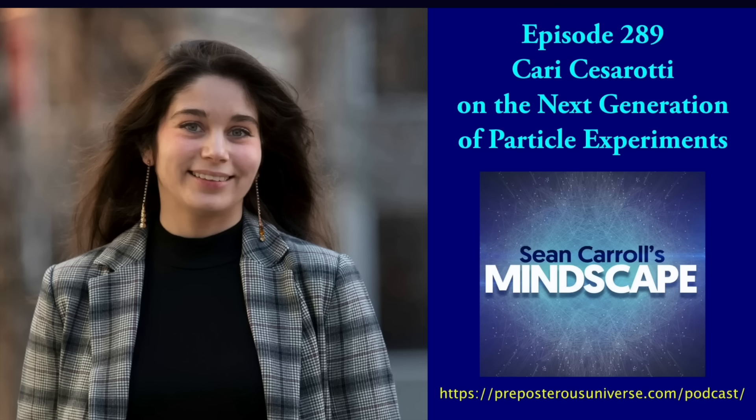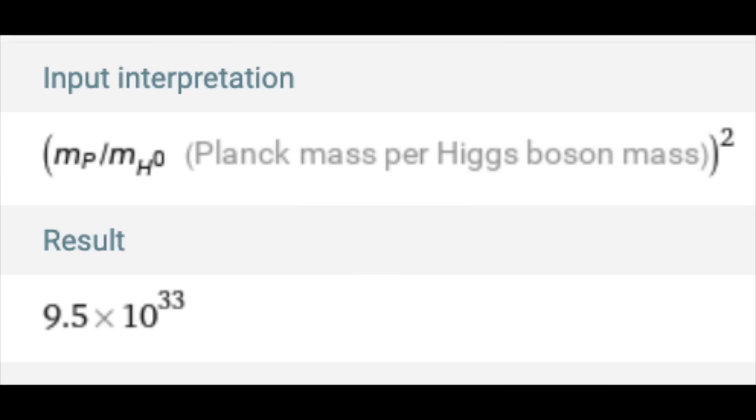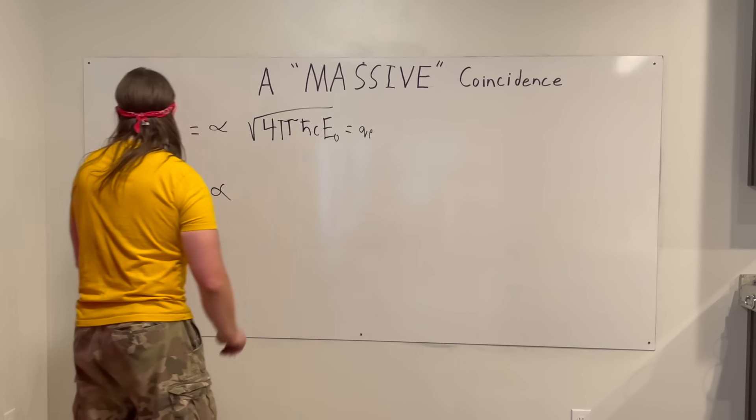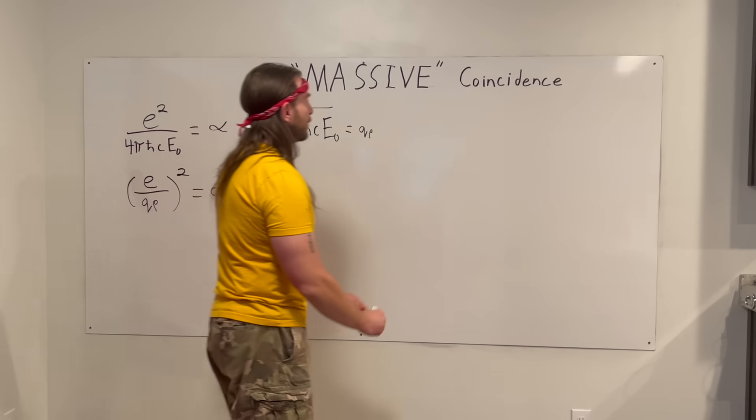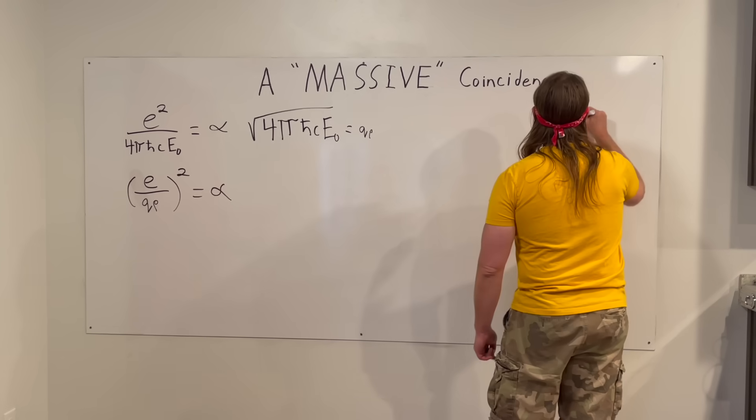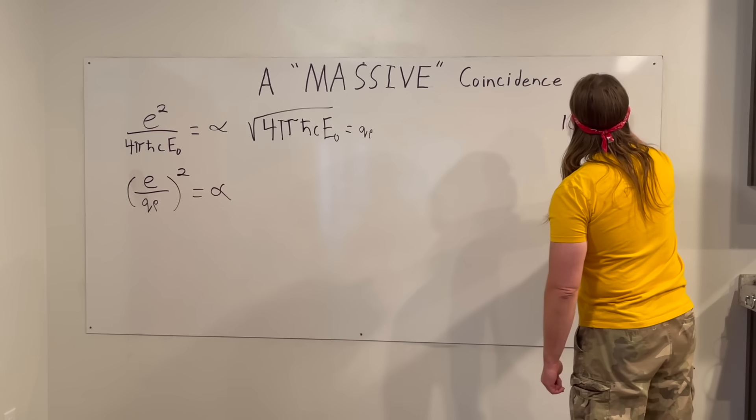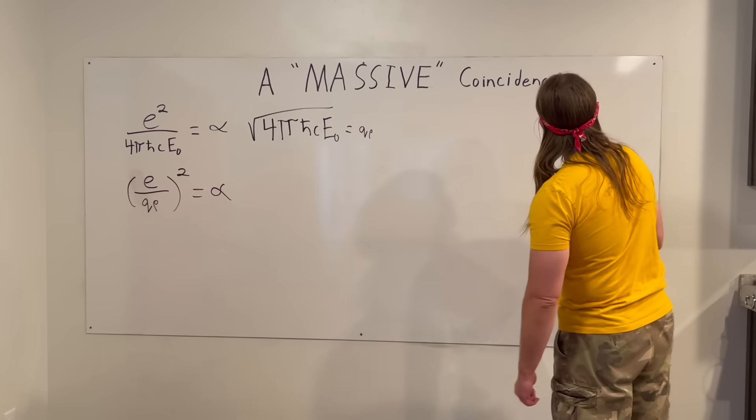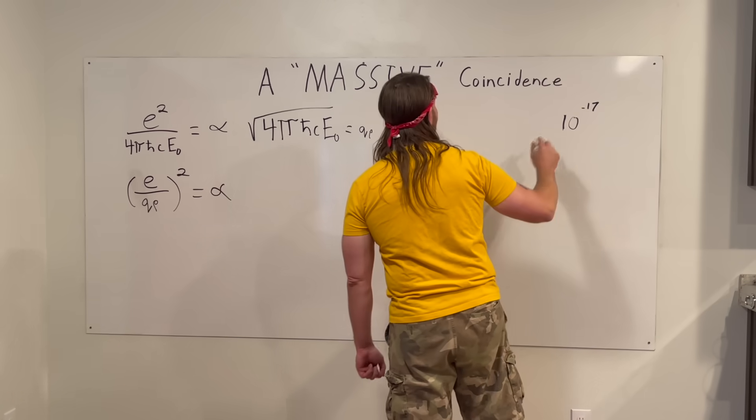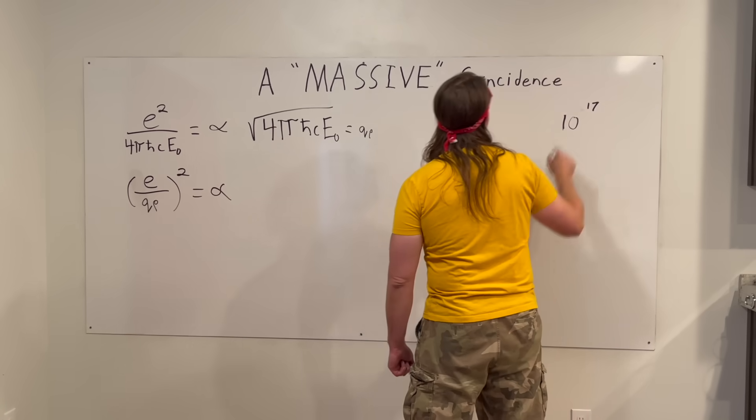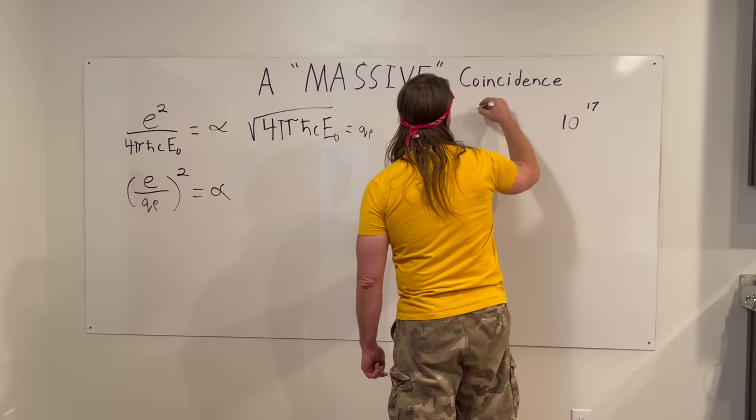And so this is the hierarchy problem. And the hierarchy is just the mass scale that we expect, and the mass scale that we see everything else sitting at. And the fact that there's 10 to the 18 differences, I mean, really 10 to the 32, because it's squared, and that's the real first principles number. The fact that something can be off by 32 orders of magnitude from our theoretical predictions, where did that come from?